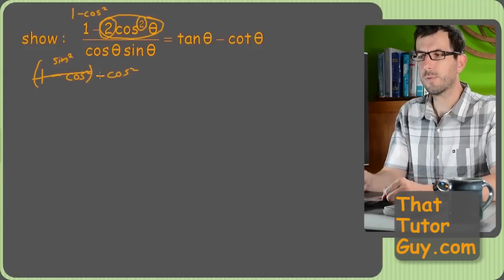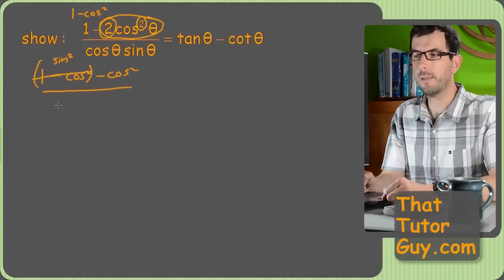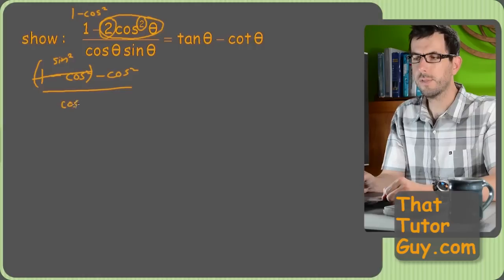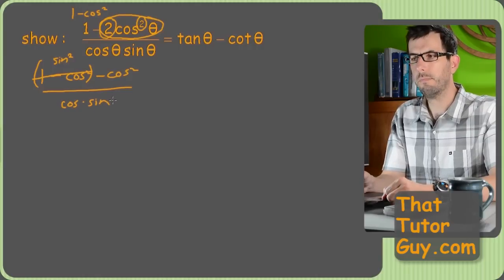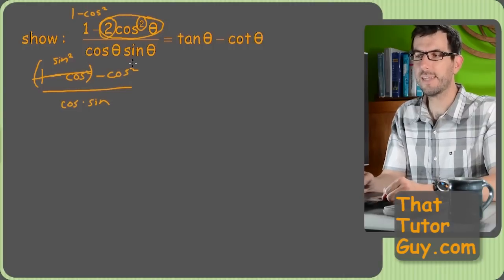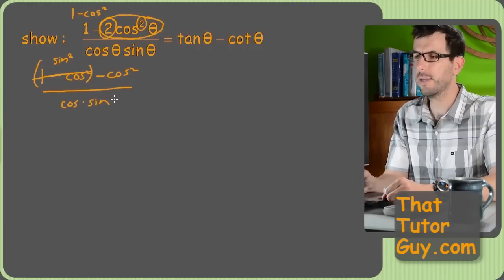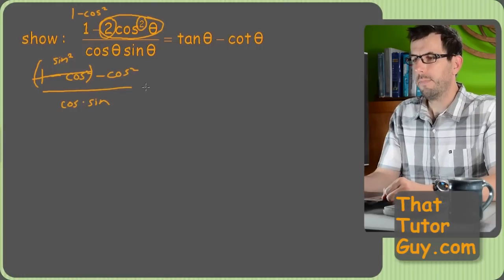So I got sine squared minus cosine squared upstairs. I've got a cosine times sine downstairs. What to do? I don't actually know exactly where this is headed. I just know that anytime you can use an identity, it's a good idea.